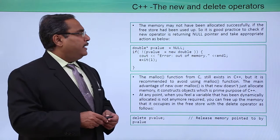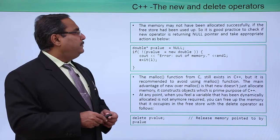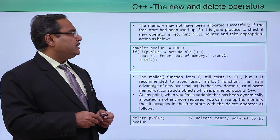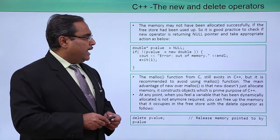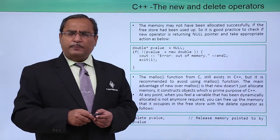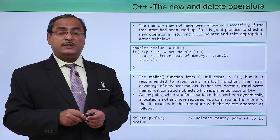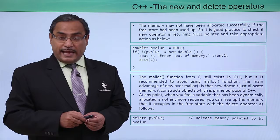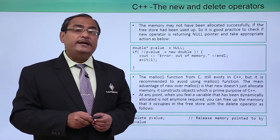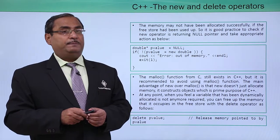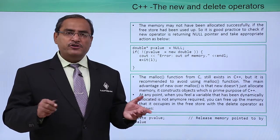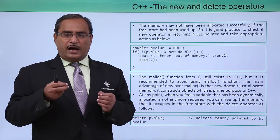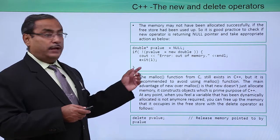The memory may not be allocated successfully if the free store has been used up. It is good practice to check if the new operator is returning a null pointer and take appropriate action. Sometimes memory spaces may not be available, meaning dynamic memory allocation fails and the new operator returns null — indicating no free memory is available for allocation.